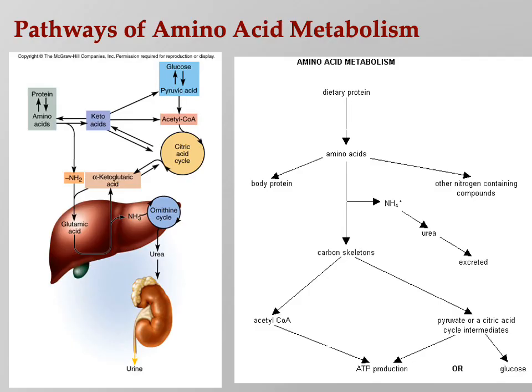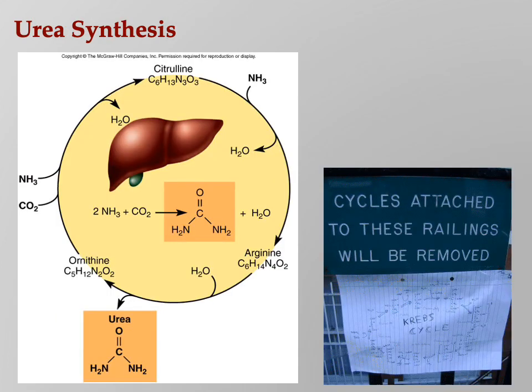The process of making urea is called the ornithine cycle, or urea cycle. You come in on the left with an NH3, go through all those steps, and end up with urea. The liver converts ammonia to urea, which is then removed from blood by the kidneys — that's why it's called urine.